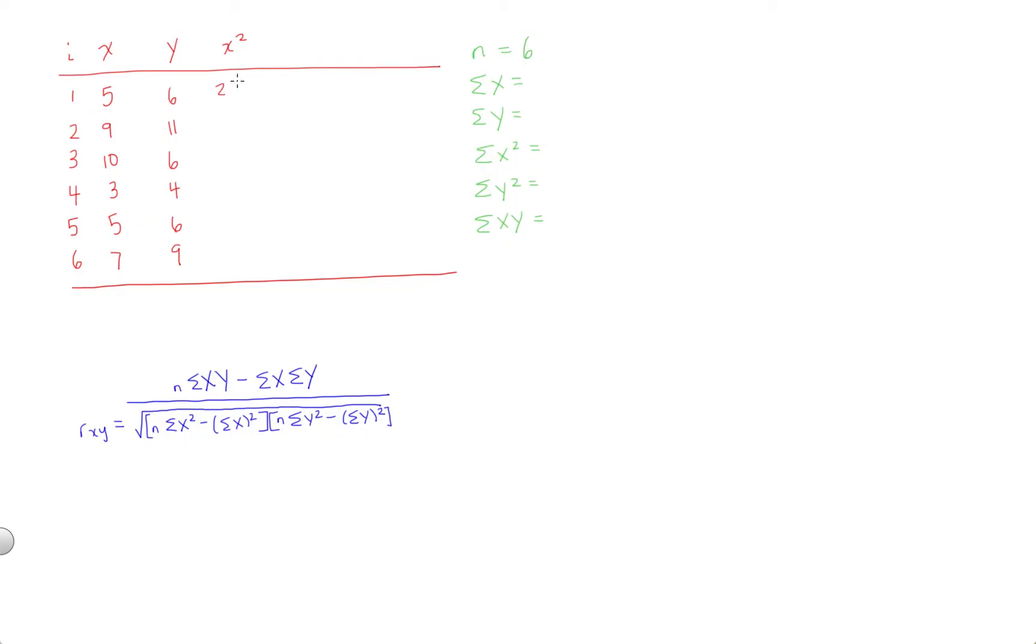So 5 squared is going to be 25, 9 squared is going to be 81, 10 squared is going to be 100, 3 squared is going to be 9, 5 squared is again 25, and 7 squared is 49.